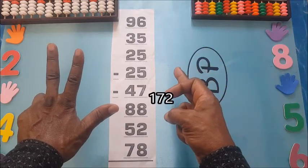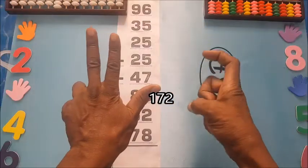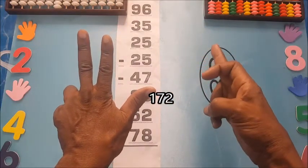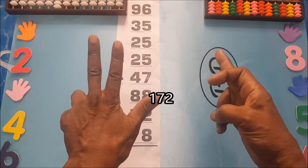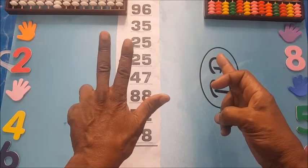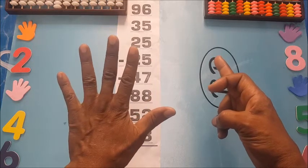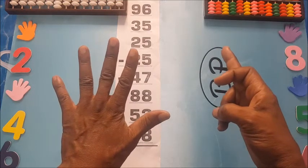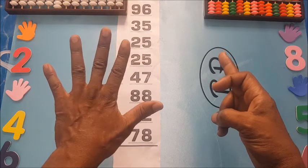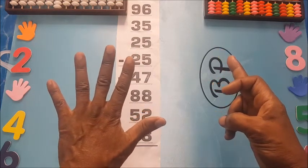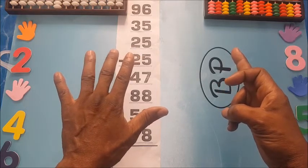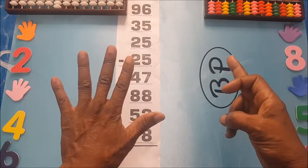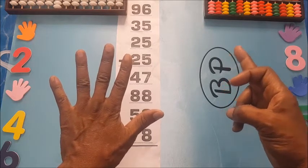That means we have 172. Now 172 plus 52: 10, 20. And since here we have 100, plus 10 will make 90, and 90 plus 10 will make it 200.